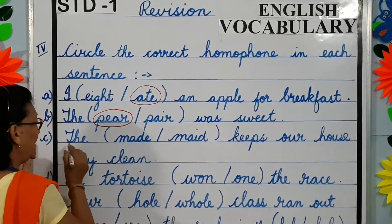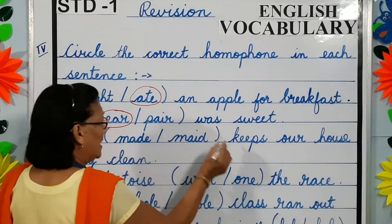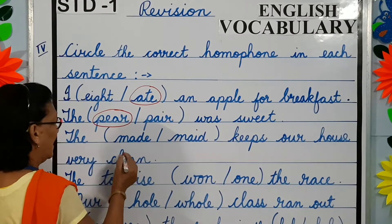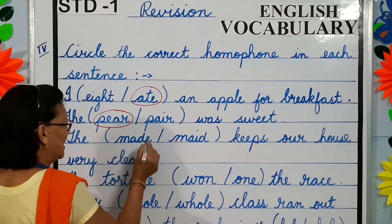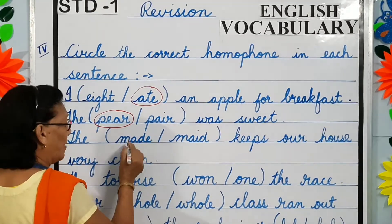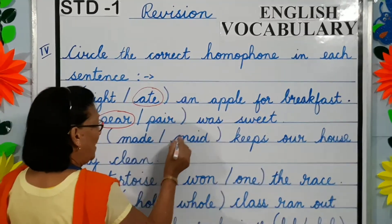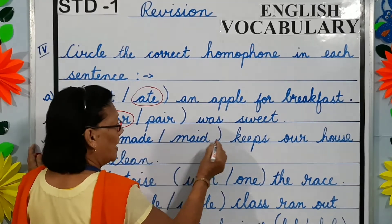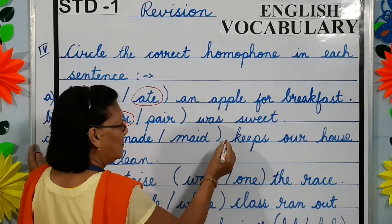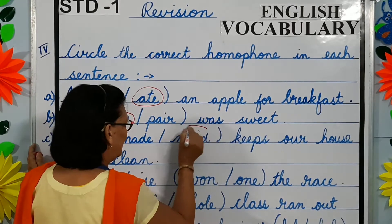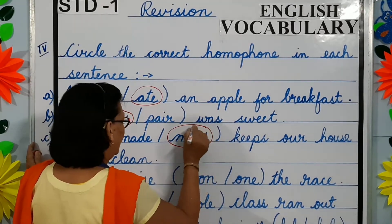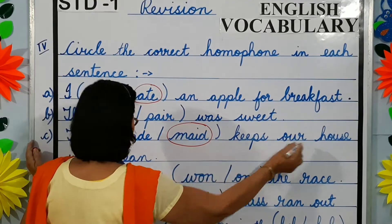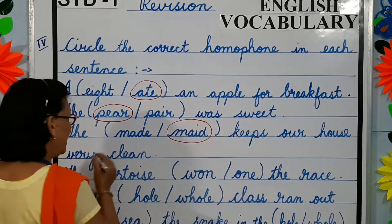C. The maid keeps our house very clean. M-A-D-E: made is to make something. M-A-I-D: maid is a person who helps to keep the house clean. The maid keeps our house very clean.